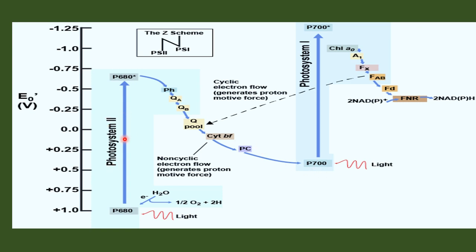Photosystem 2 absorbs light at a shorter wavelength near to red light and transports its energy to the reaction center of chlorophyll molecules called P680. Together, photosystem 1 and photosystem 2 are involved in the combined generation of ATP as well as NADPH. This whole mechanism can also be called the Z scheme.